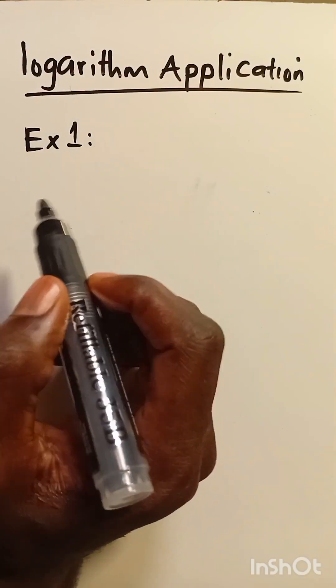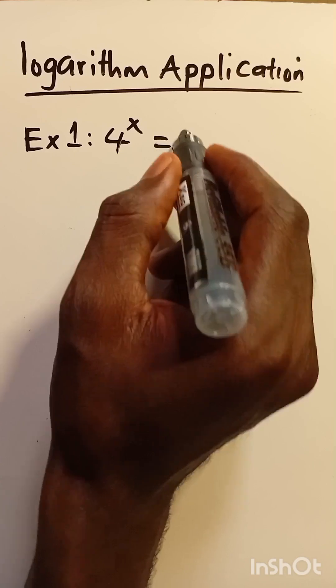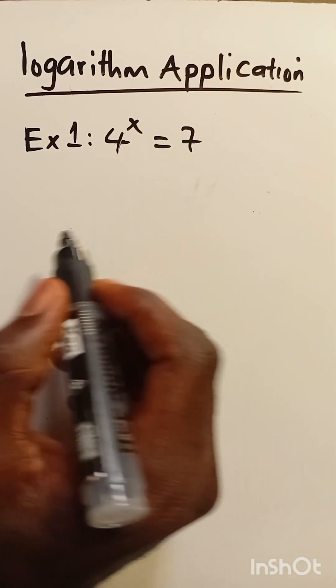I want to show the application of logarithm. So imagine we have 4 to the power of x equals 7. And how do we get the value of x?